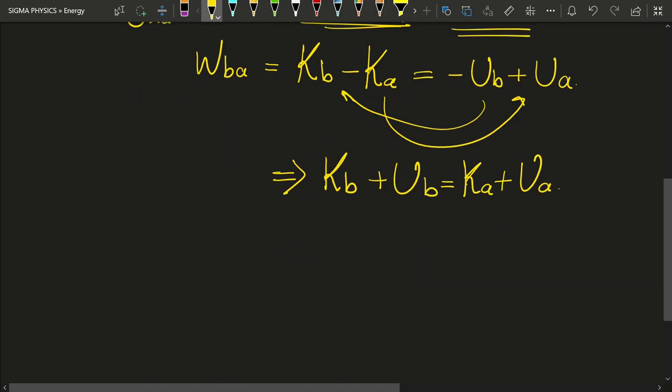Now I want you to notice something very interesting. This quantity as a whole, which is the sum of the kinetic energy and potential energy at Ra, is equal to the sum of the kinetic energy and potential energy at Rb.